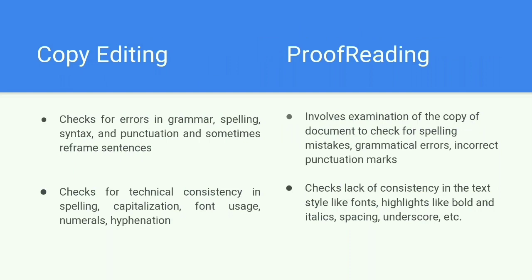Now let us look at the basic differences between copy editing and proofreading. Copy editing checks for grammar, spelling, syntax, and punctuation, and also engages in reframing sentences. Proofreading involves the examination of the document to check for spelling mistakes, grammatical errors, incorrect punctuation marks, and similar issues. Proofreading also checks for lack of consistency in the text, such as formatting like bold and italic, spacing, and underscoring. Copy editing, on the other hand, checks for technical consistency in spelling, capitalization, font usage, numerals, and hyphenation.